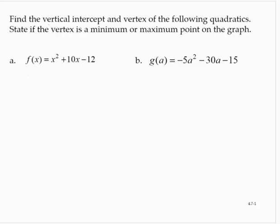All right, so the vertical intercept first. I'll do that in blue. f of 0 would be 0 squared plus 10 times 0 minus 12. And that's negative 12. So the vertical intercept is 0, negative 12.